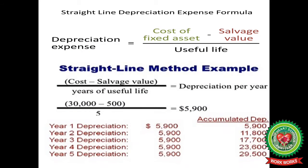To summarize: straight line depreciation equals cost of asset minus salvage value, divided by useful life. For example, if the cost of an asset is $30,000, its scrap value is $500, and the number of useful years is 5, then the depreciation comes out to $5,900 per year. This amount keeps accumulating every year at the same rate. After 5 years of useful life, the total accumulated depreciation is about $29,500.